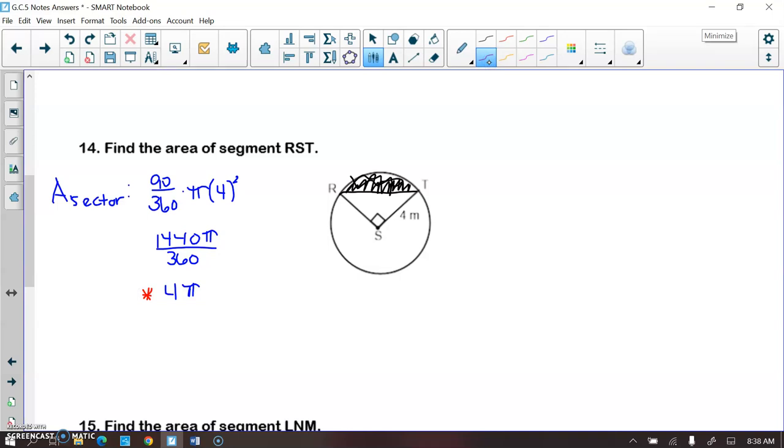Now what I'm going to do is I'm going to actually just draw this triangle a little bit larger on the outside of the circle. Okay. So on the circle, ST and RS are radii, so those are congruent, so that means RS is going to be 4.